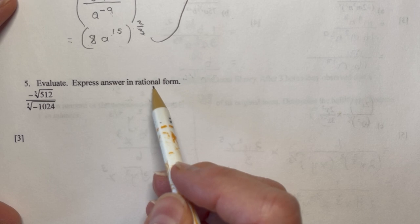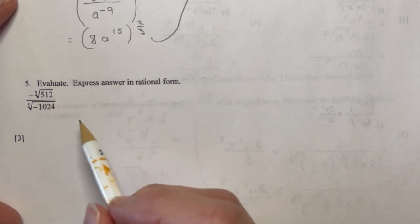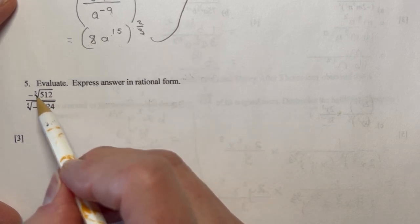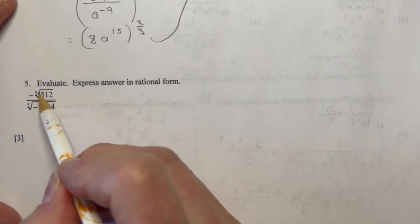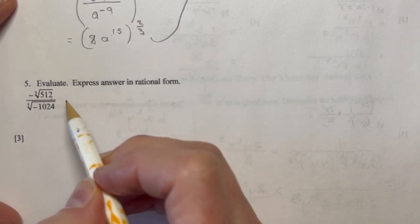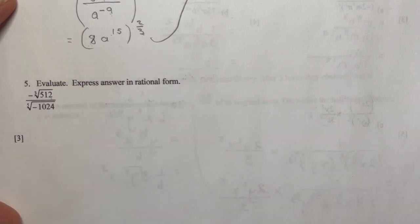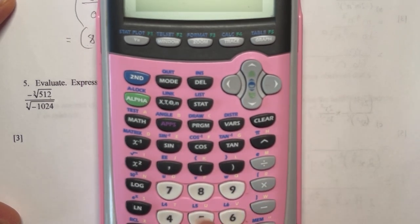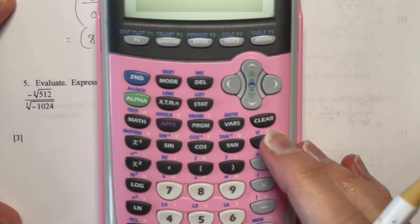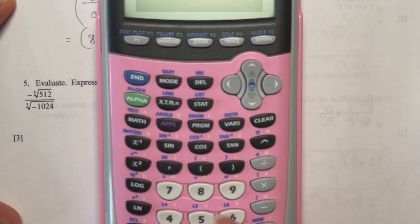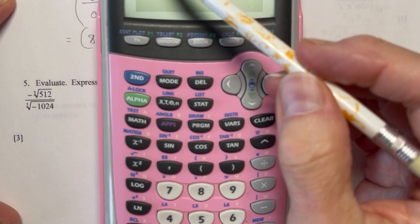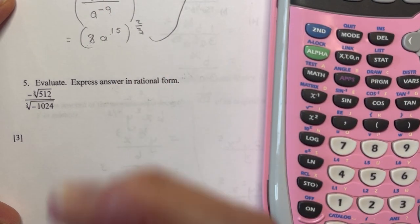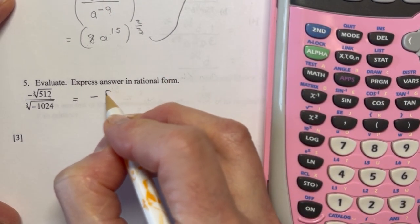Evaluate. Express the answer in rational form. So look at all these crazy little numbers here for you. So this is much easier than you think because the cube root of 512, you could do that on a calculator. Now, if you don't know how, I'll just show you here for one second. So if I have 512 and I'm doing the cube root, so I make it to the power of, and you need brackets here. So that's to the one-third. 512 to the one-third, and the answer is 8. Now, you do have a minus sign out front, so don't forget that. Minus 8.